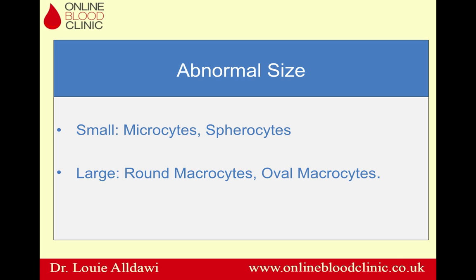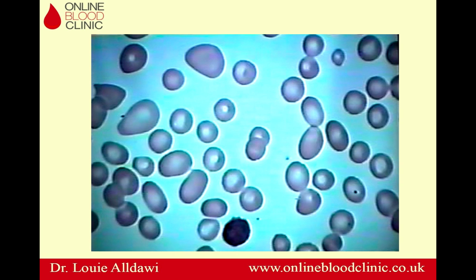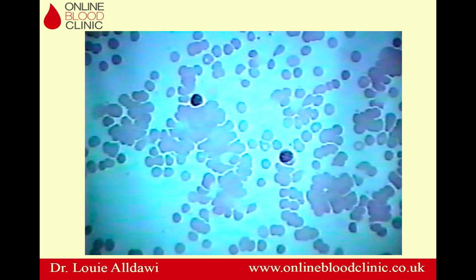Now we'll talk about abnormal size. Microcytes and spherocytes were already covered. We now discuss round macrocytes and oval macrocytes. Oval macrocytes are typically found in B12 or folate deficiency and with cytotoxic drugs like hydroxycarbamide. In these cases the MCV can be above 120–130. In liver disease or alcoholism — the most common cause of macrocytosis — the MCV is usually in the range of 100 to 110 and rarely above 120. A falsely high MCV can result from cold agglutination, where red blood cells clump together; in this case you need to warm the blood sample and re-analyze it to obtain the true MCV.